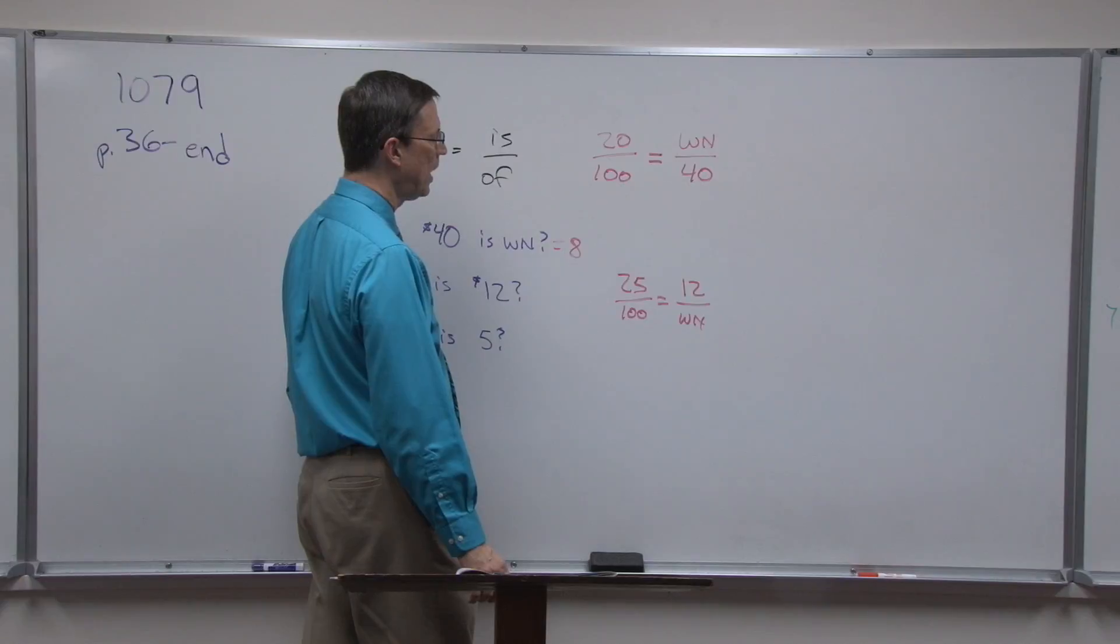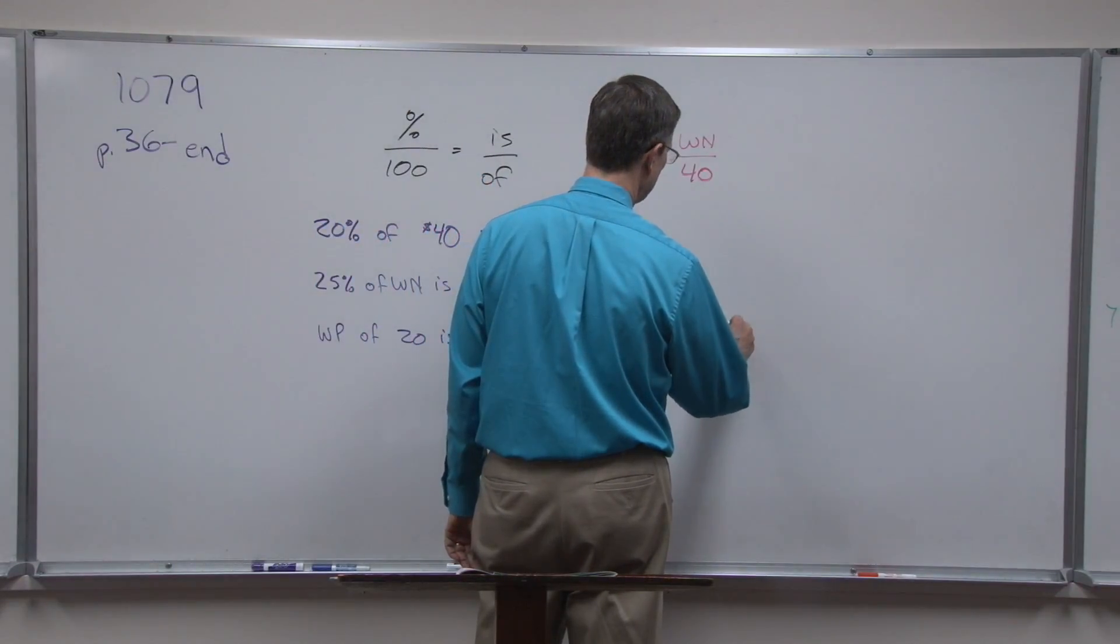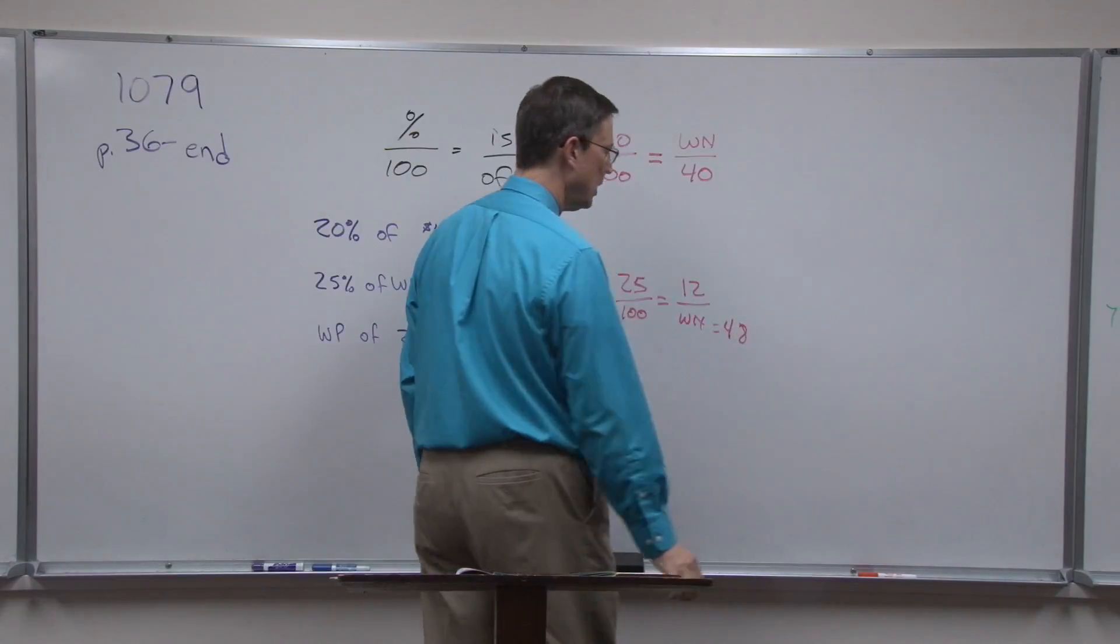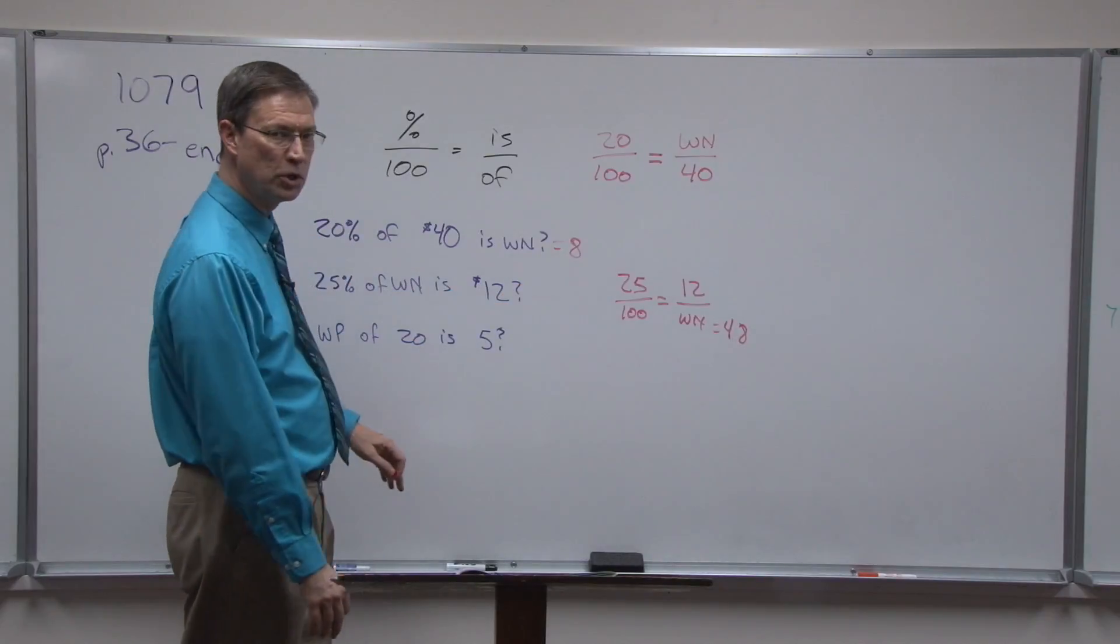All right, so now when I cross multiply I'll take 100 times 12. 12 times 100 is 1,200, and then when I divide by 25 I get 48. I'm not going to waste time on the video to do all the long math for you, but that's what it would work out to be. You can check my answer on that if you'd like.